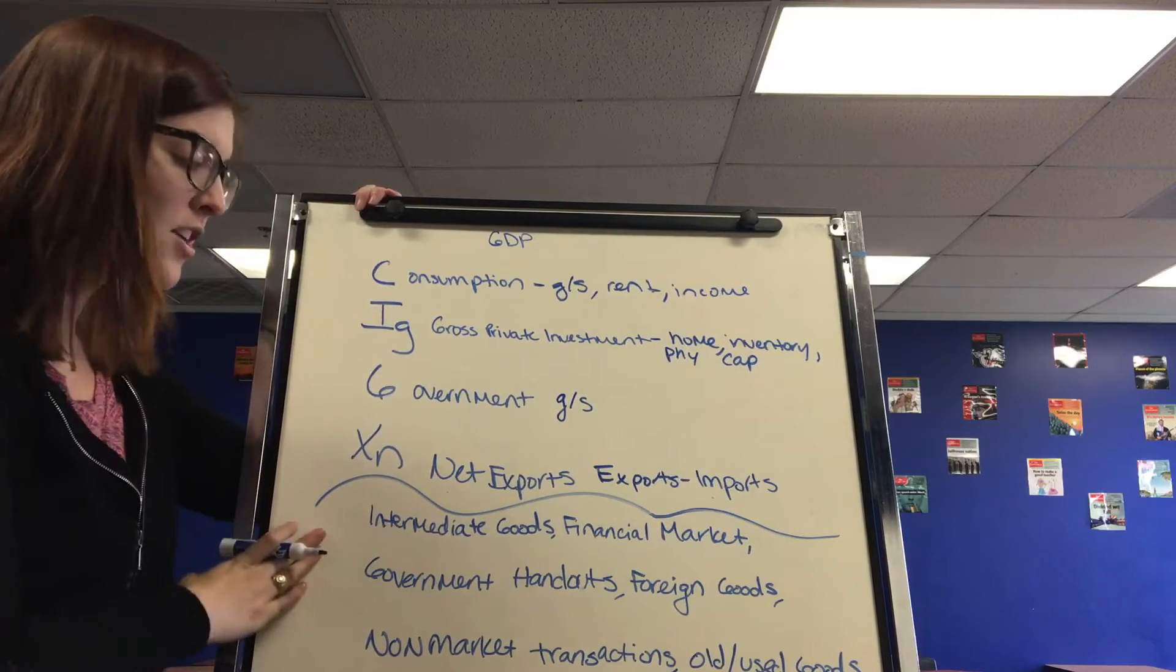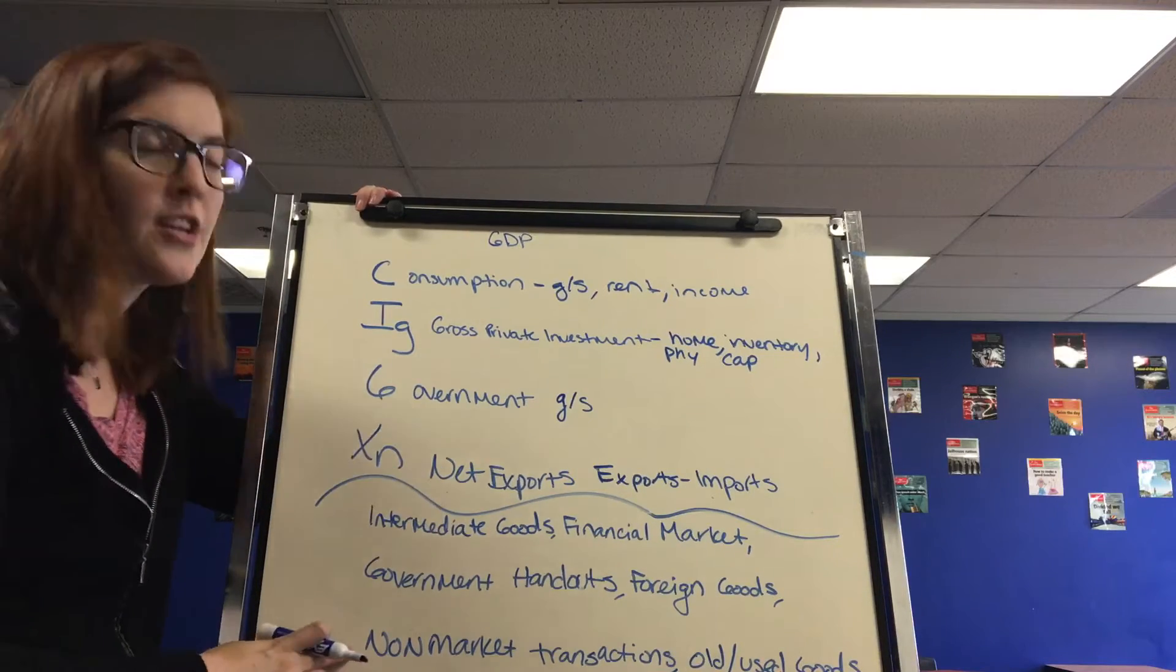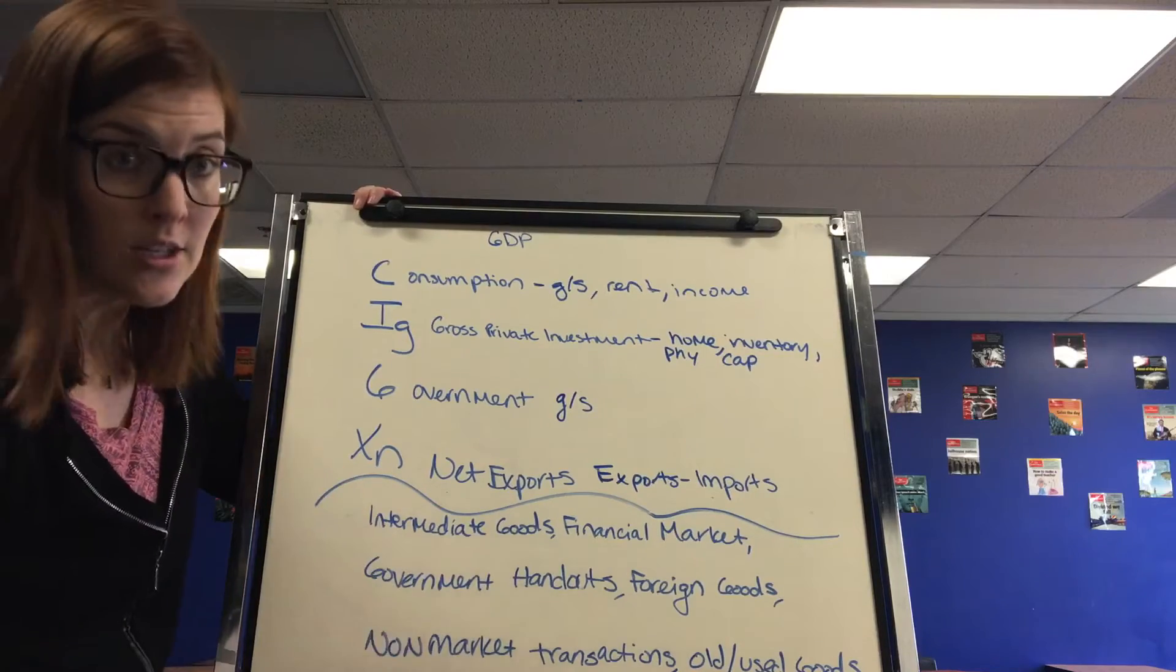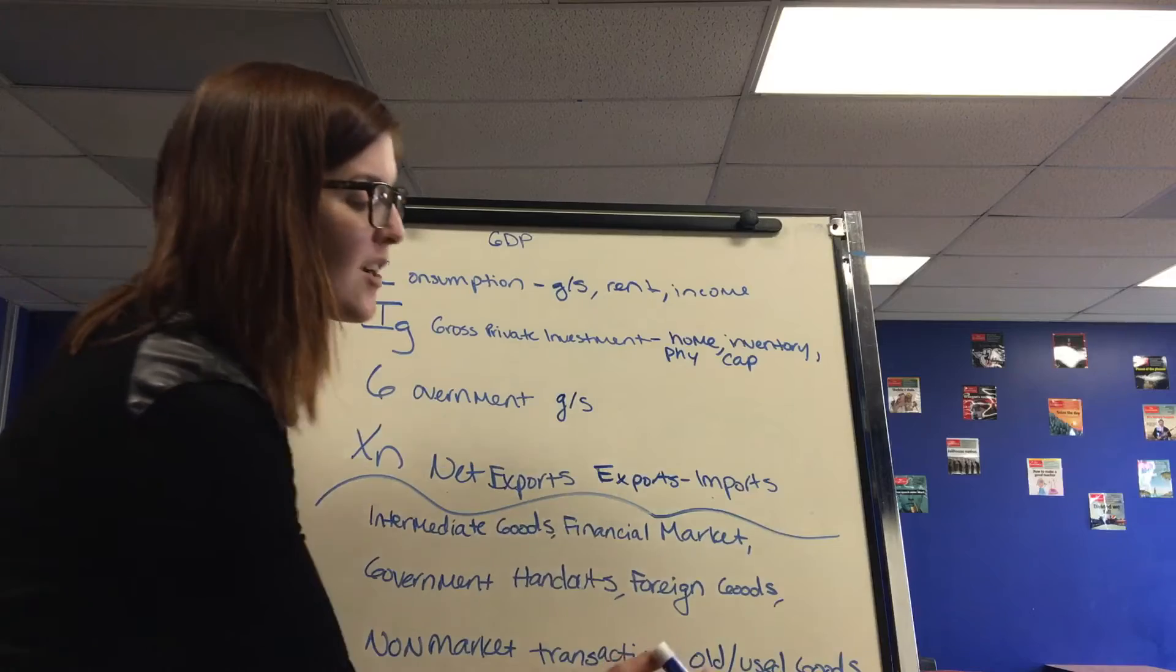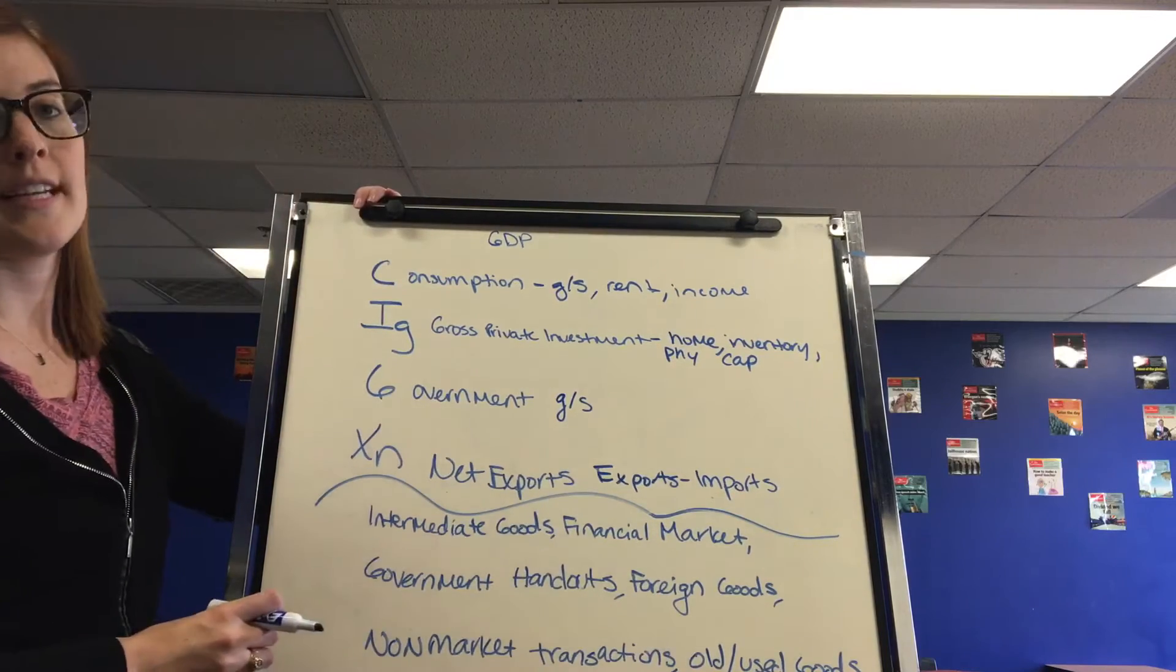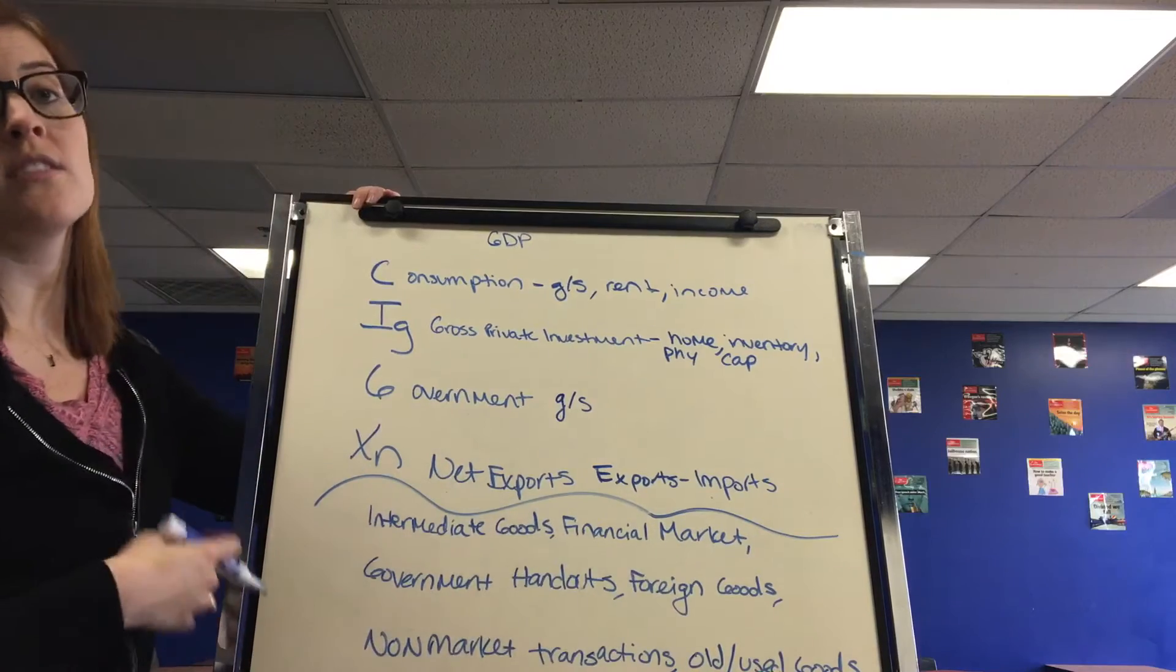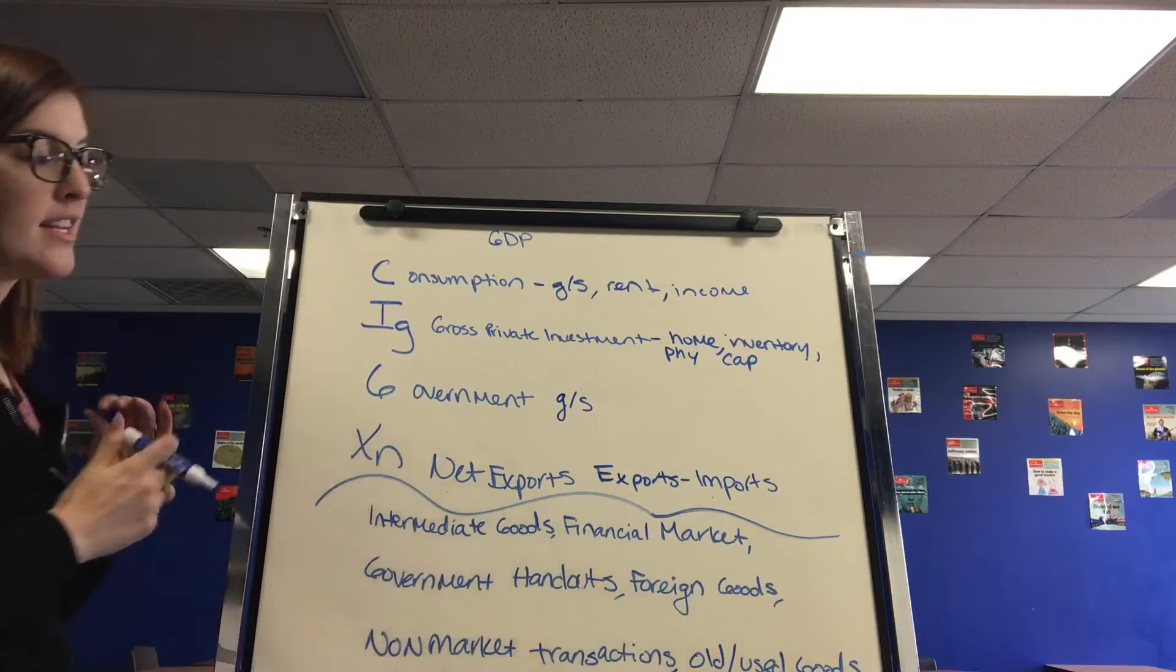So those are the things that count. And I've gone over some of the ones that don't count. But to finish it out, non-market goods are goods that are not reported as income to the government, like babysitting you don't pay taxes on, or volunteering with no dollar value. Anything old and used also doesn't count. It has to be in the year it was made. And it can only count once. So if it's reused, it doesn't count in GDP.